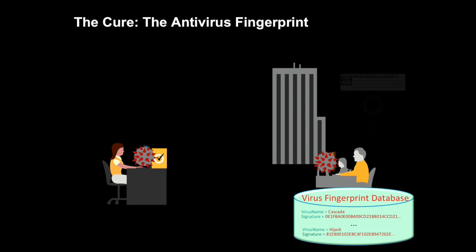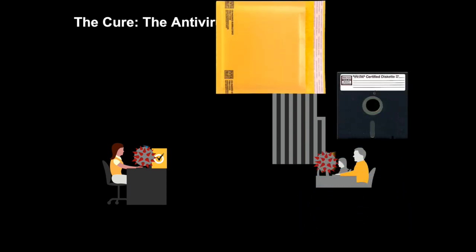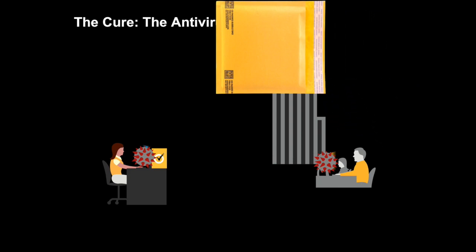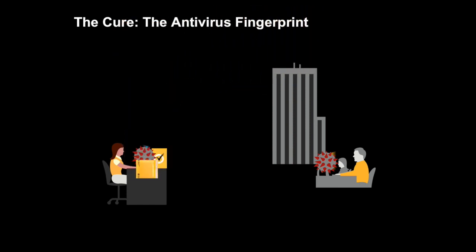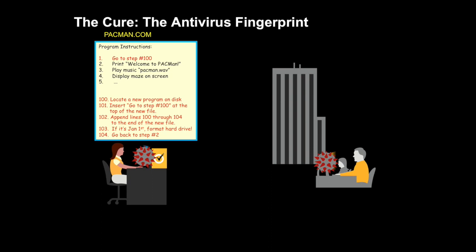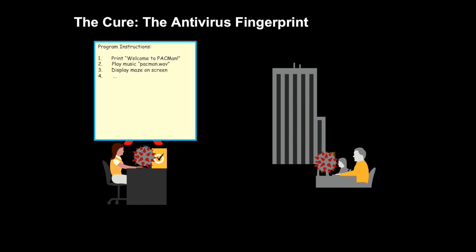Once we'd identified the machine language instructions and added them to our data file, we'd stick that data file on a floppy disk, put it in a floppy disk mailer, and send it over U.S. Postal Service to the customer who submitted the virus. The customer would receive a floppy disk mailer in their mailbox, stick it in their computer, install the updated data file with the new fingerprint. Then our antivirus software would scan through each file on the user's computer looking for that sequence of numbers. If found, we'd remove them from the file and restore the original so only the legitimate program was left — and the virus would be removed from the computer system.